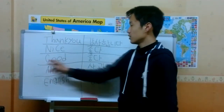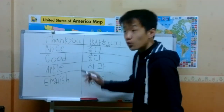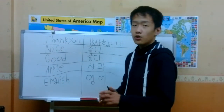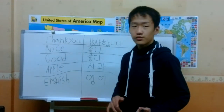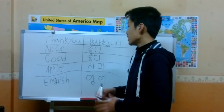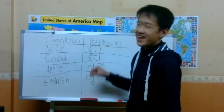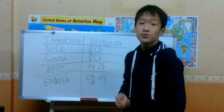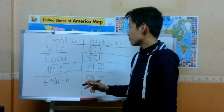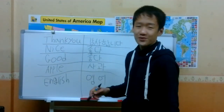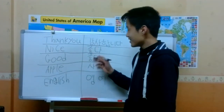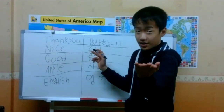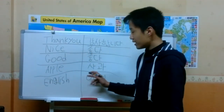Next one: good — good is also 좋다. Nice and good are the same word for us. Please repeat after me: 좋다. Next one: apple. Apple is 사과 in Korean. You might wonder why I put apple in here — it's actually the first English word I ever learned. Please repeat after me: 사과.